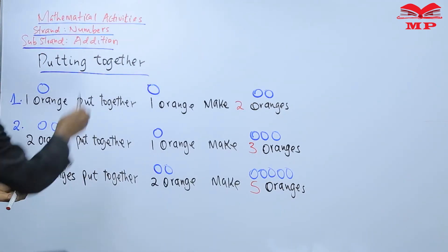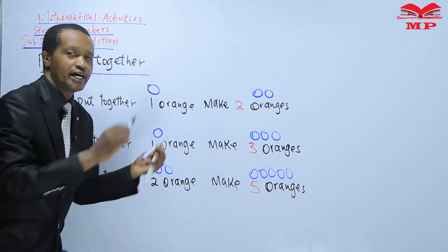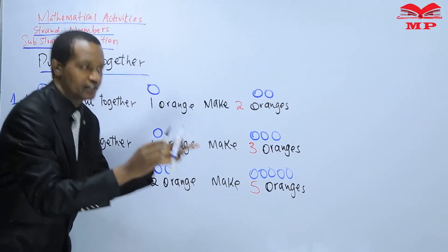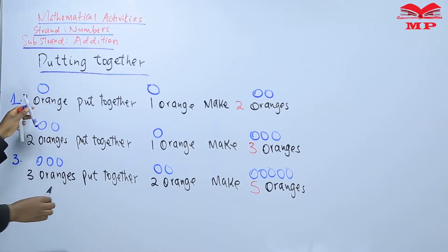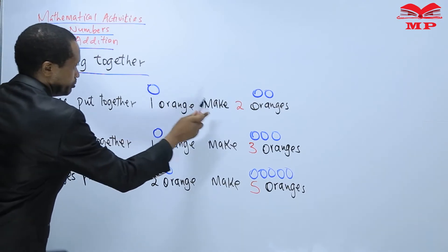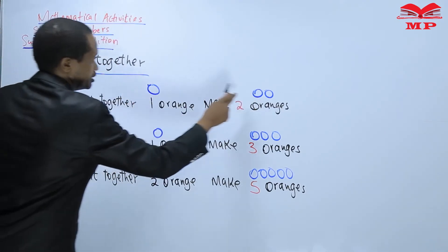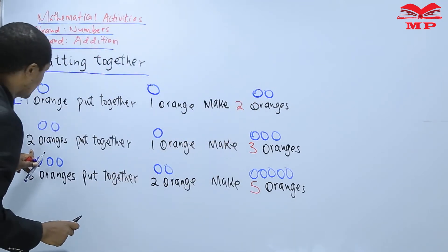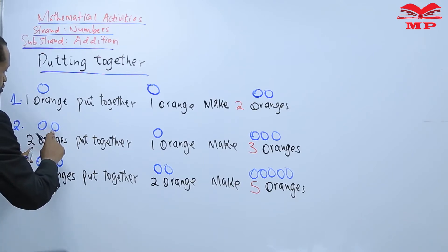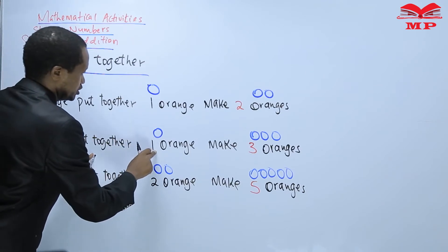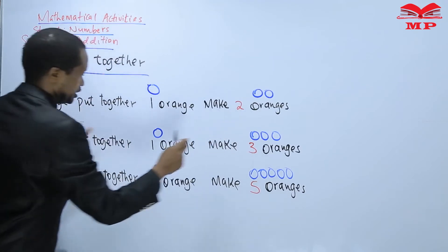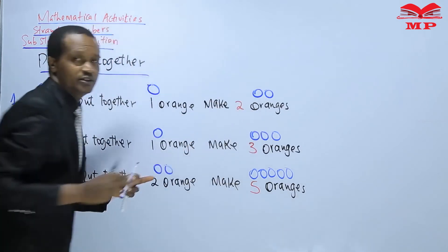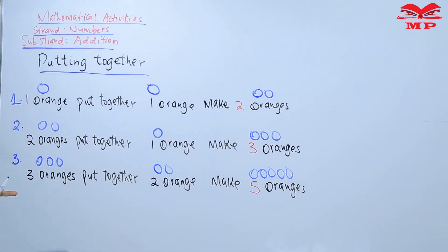Learners, do you now understand addition? What are we doing? We are adding. Adding means putting together. In our first example, we put together one and one to make two. In the second example, we have taken two oranges put together one orange. The total is three. Do you understand, learners? Yes, you understand.